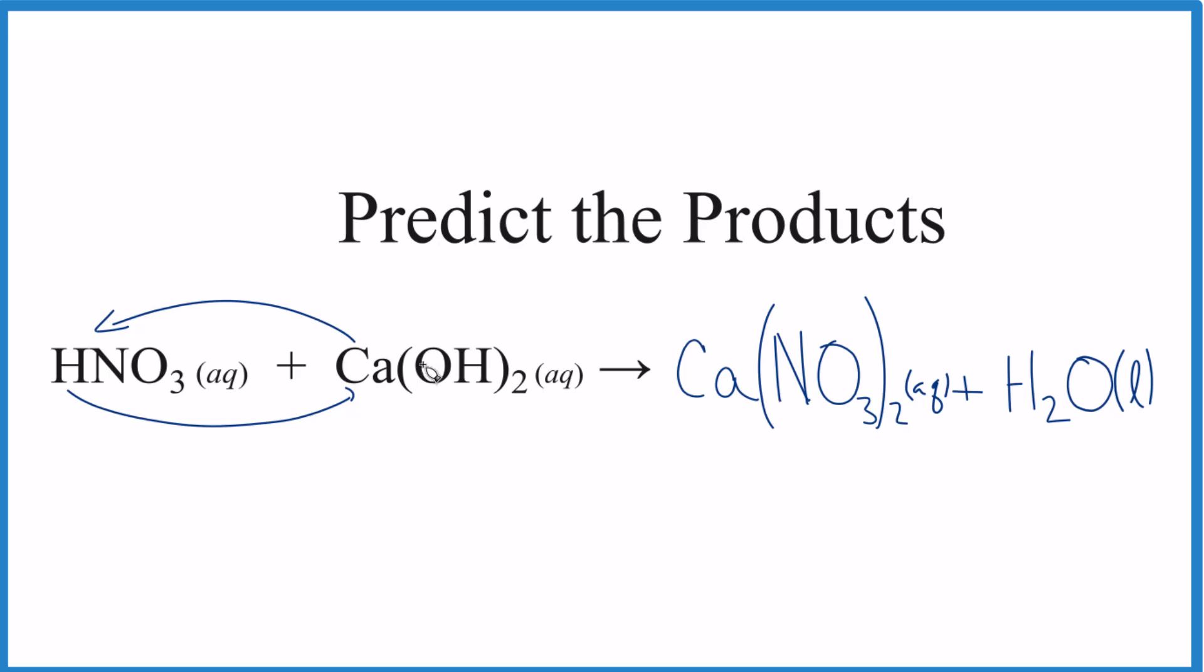First, you recognize the type of reaction—we have an acid and a base. It's also a double displacement. Write the products, make sure the charge is balanced, and then you write your states. That's it. Dr. B, thanks for watching.